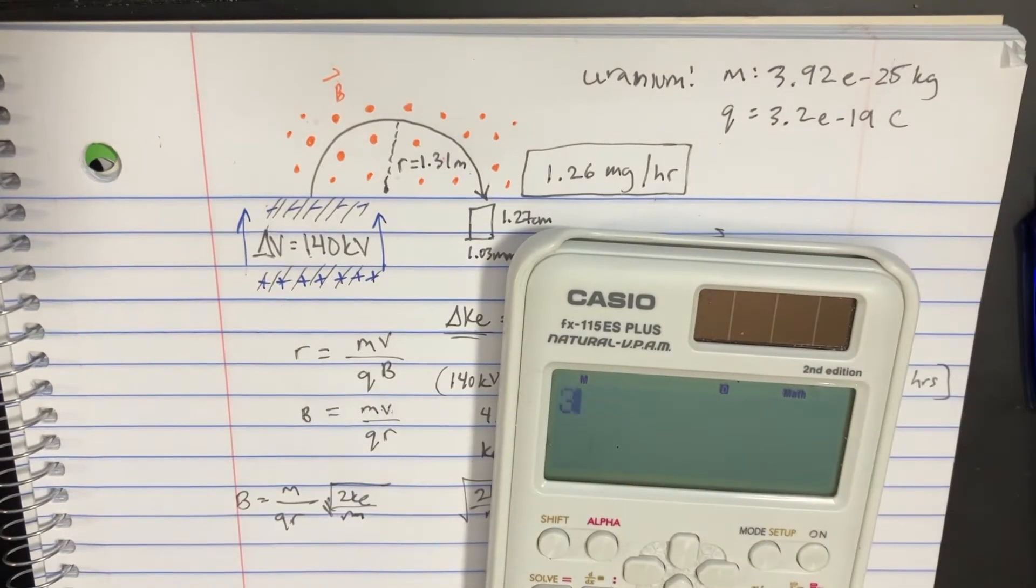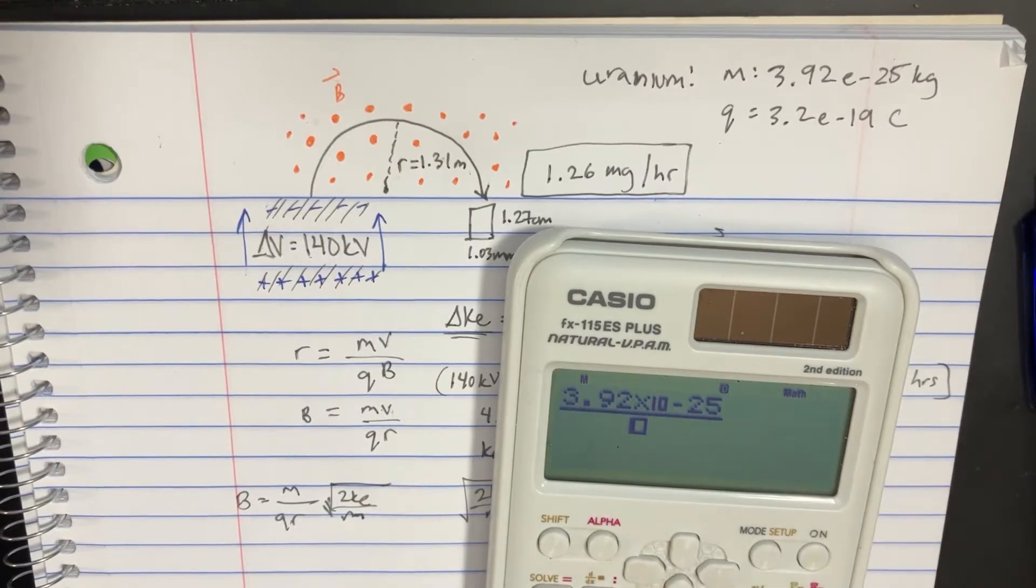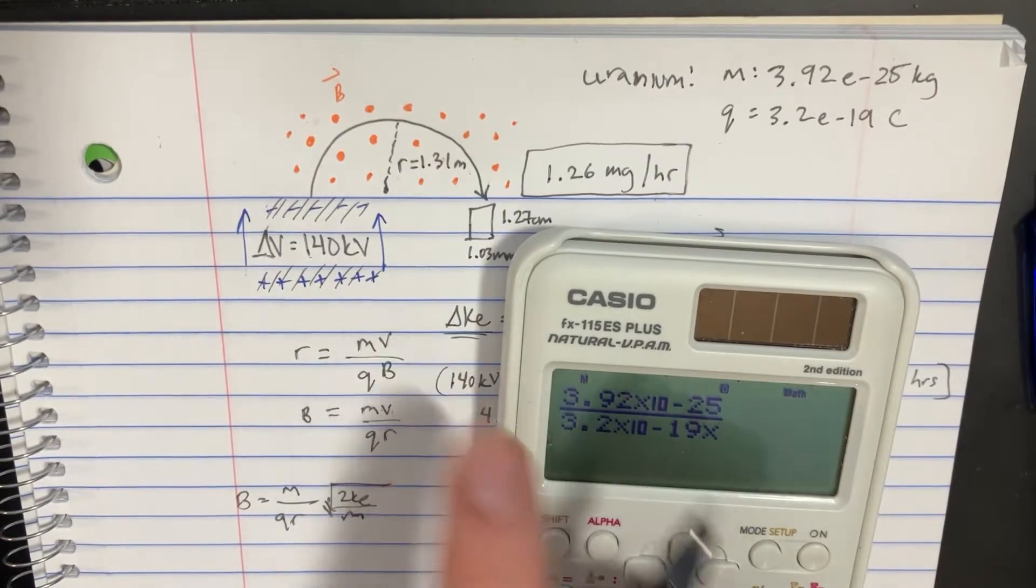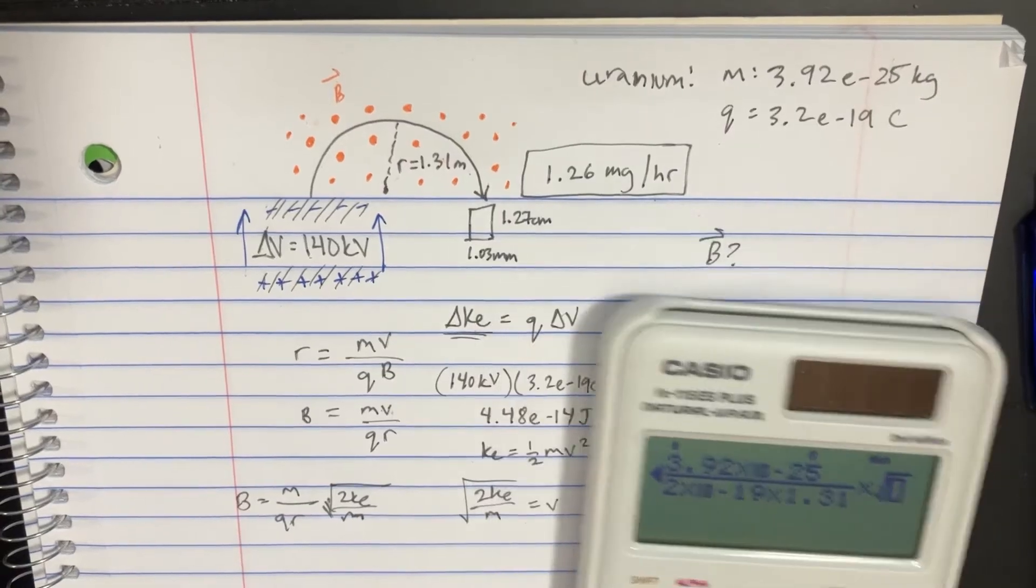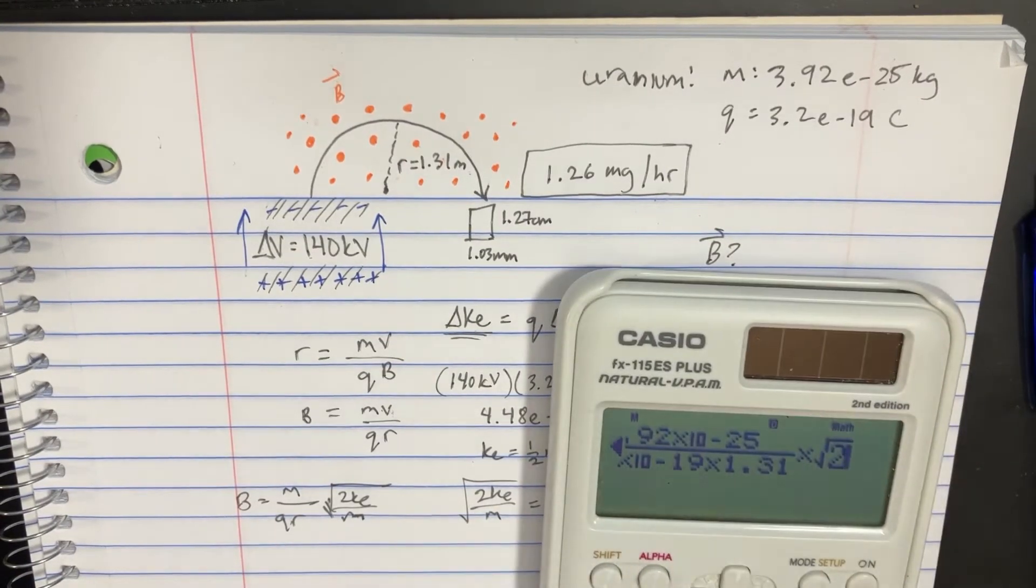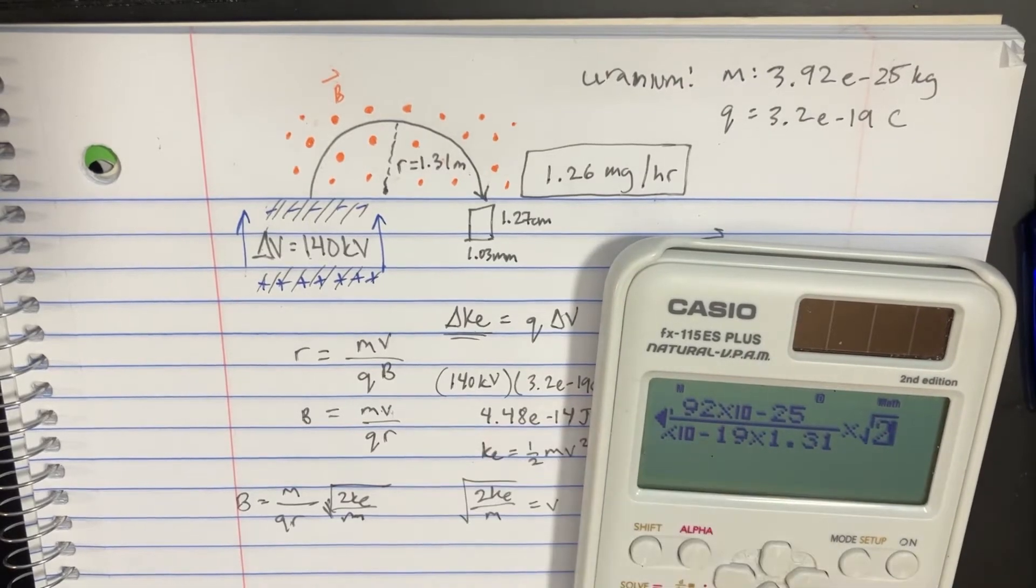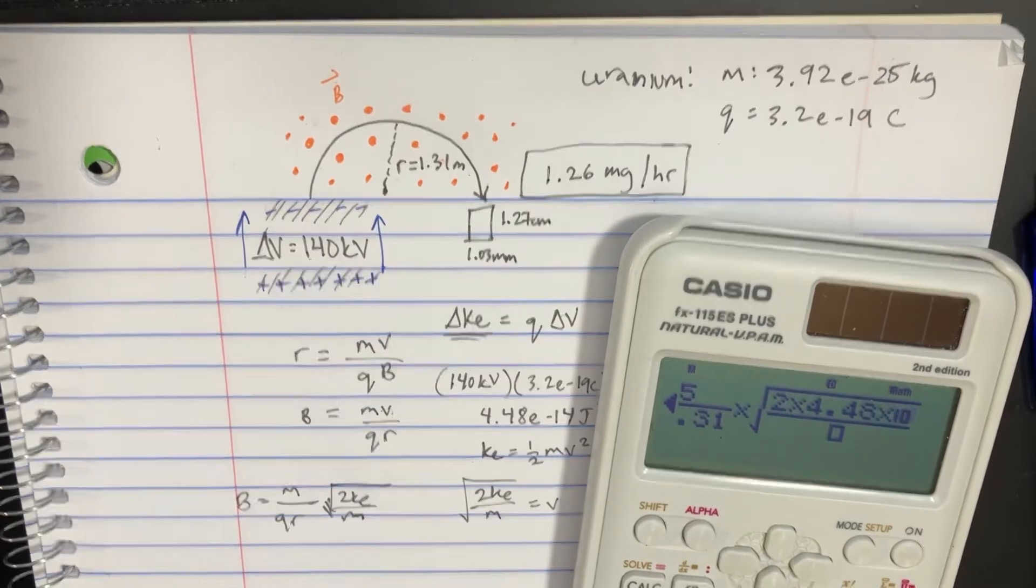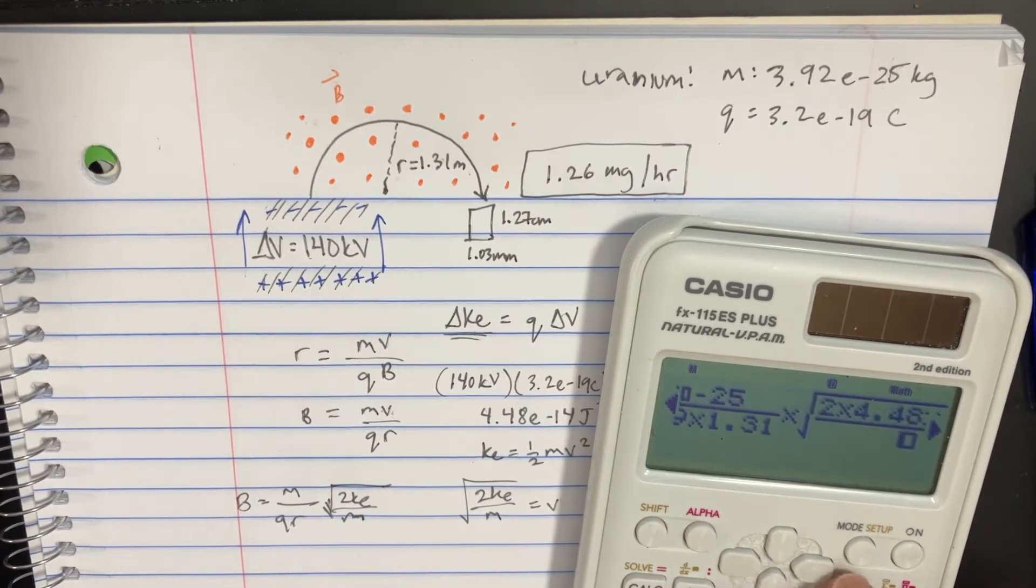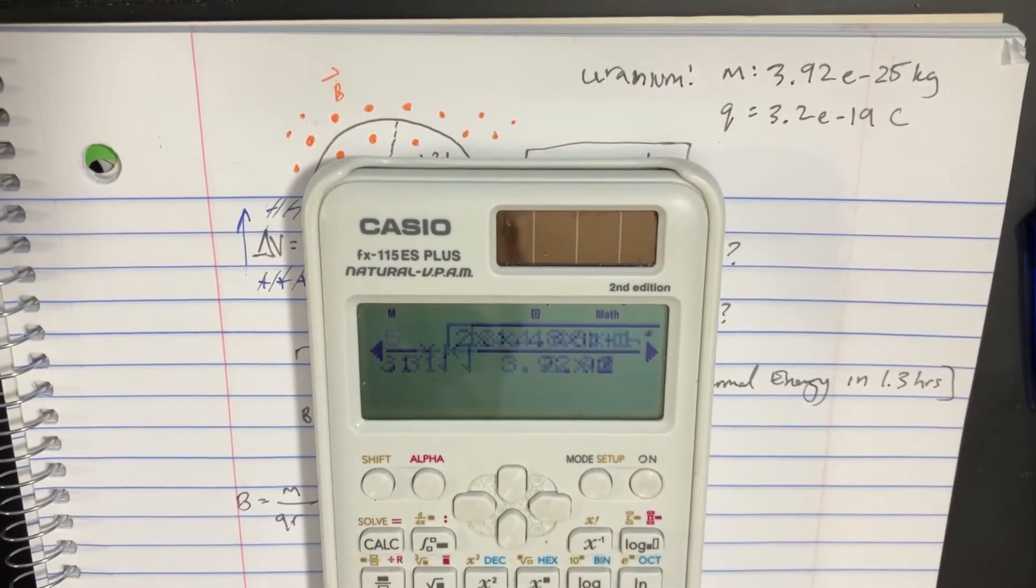We've got the mass is 3.92 to the negative 25 and we'll divide that by the q which is 3.2 negative 19 and the r which is 1.31. Then we'll multiply this whole thing by the square root of 2 times kinetic energy which is 4.48 to negative 14 and divide that by the mass which is 3.92 to 25.